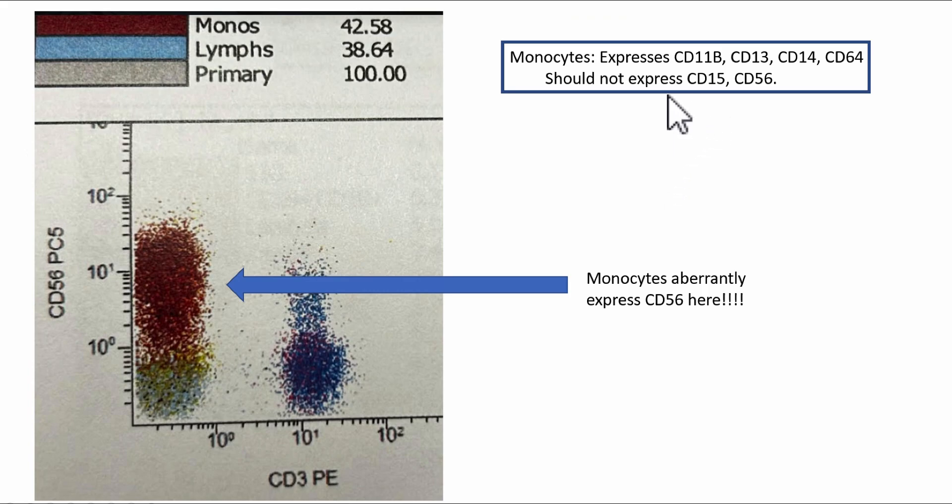Monocytes should also not express CD56. And the monos as identified by this brown color, these data points show that the monocytes express CD56, which is aberrant expression.